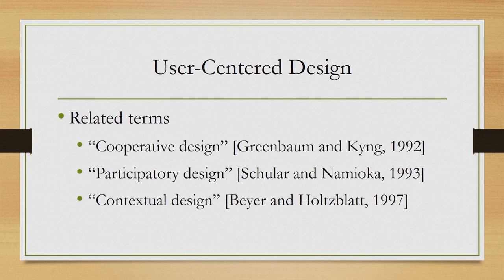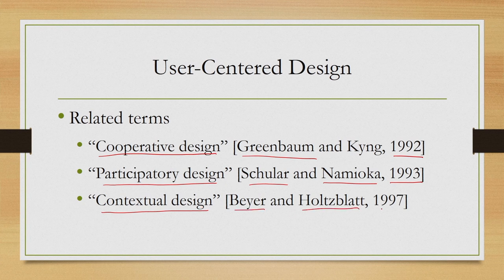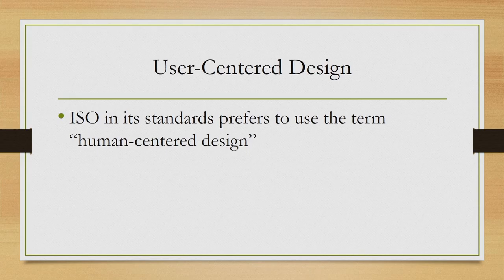There are a few more related terms connected to the concept of user centered design. One is cooperative design proposed by Greenbaum and King in 1992, then participatory design proposed in 1993 by Schuller and Namioka, and contextual design by Bayer and Holtzblatt in 1997. All these terms broadly refer to the same fact — we are involving users in the design process either actively or passively, with minor methodological variations. They all broadly refer to the similar concept of user centered design.